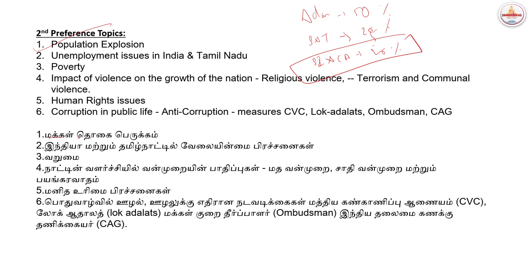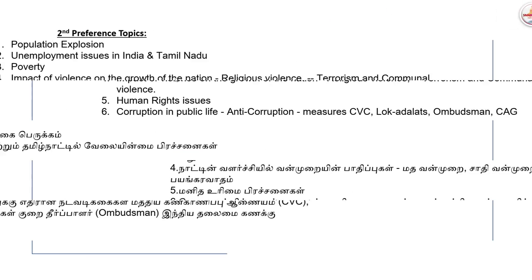Population explosion is the first topic in the second preference category. Population explosion is very important. But the first preference topic remains the most important. Unemployment issues are also a main topic — this falls under the third preference.